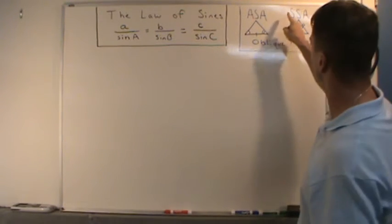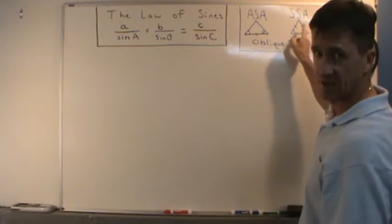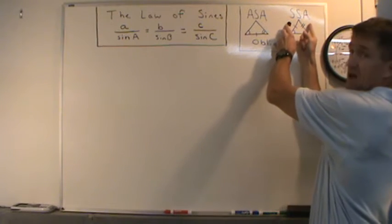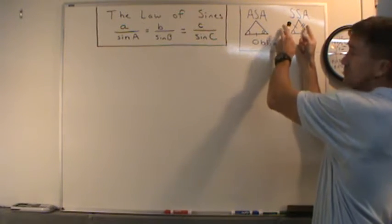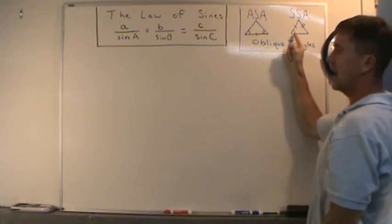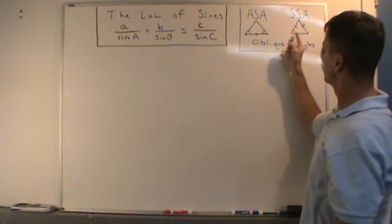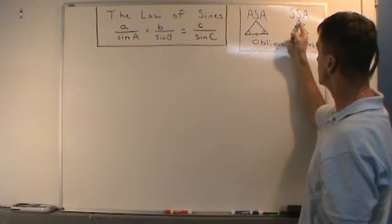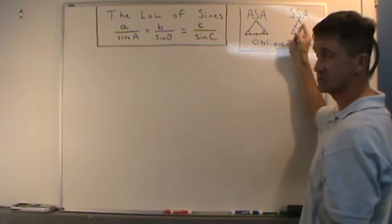The second scenario is SSA, where you have two sides given to you and a non-included angle — meaning the angle is not included between the two sides.